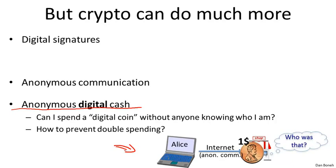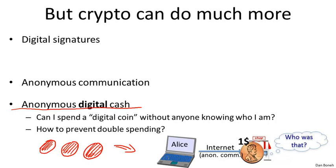The problem is that in the digital world, Alice can take her coin and make copies of it before spending it. All of a sudden, instead of one dollar coin, she has three identical dollar coins, and there's nothing preventing her from spending those replicas at other merchants. How do we provide anonymous digital cash but also prevent Alice from double spending the coin? In some sense there's a paradox: anonymity is in conflict with security, because if the cash is anonymous, there's nothing to prevent double spending, and no way to tell who committed the fraud.